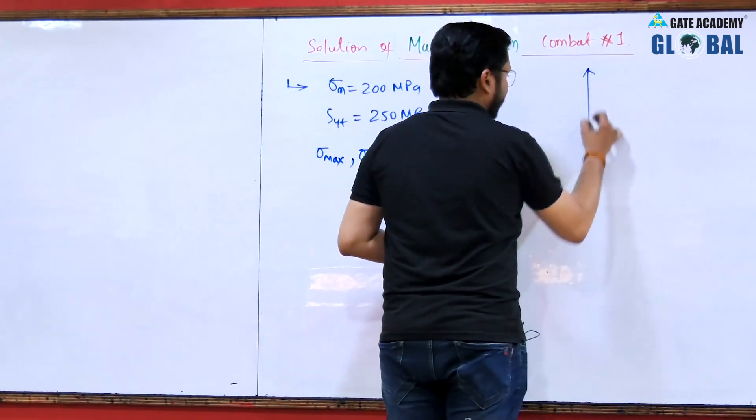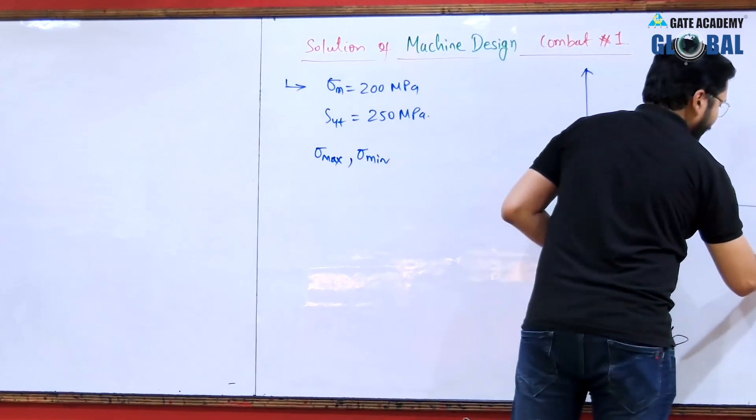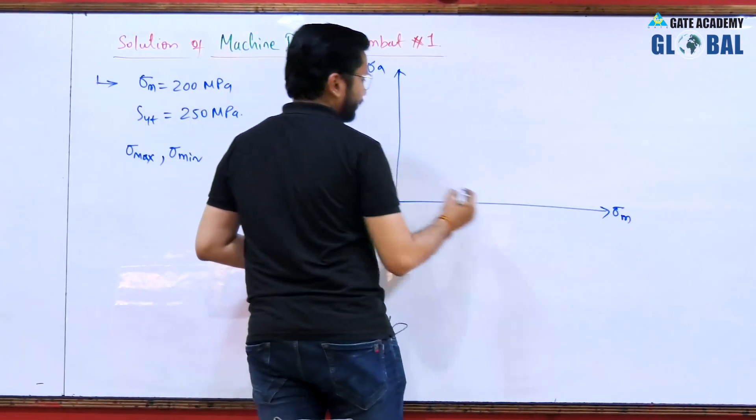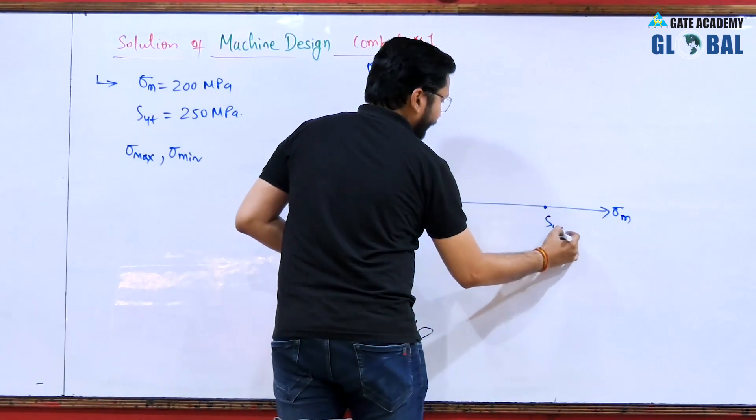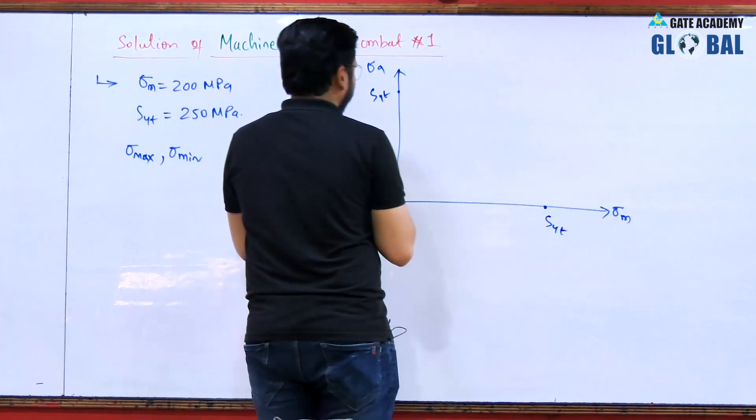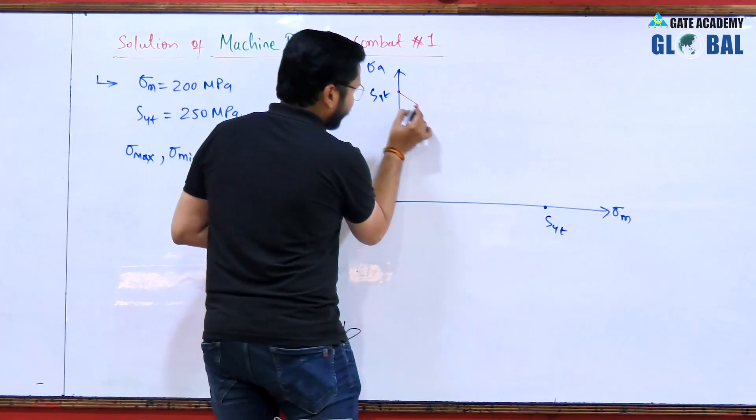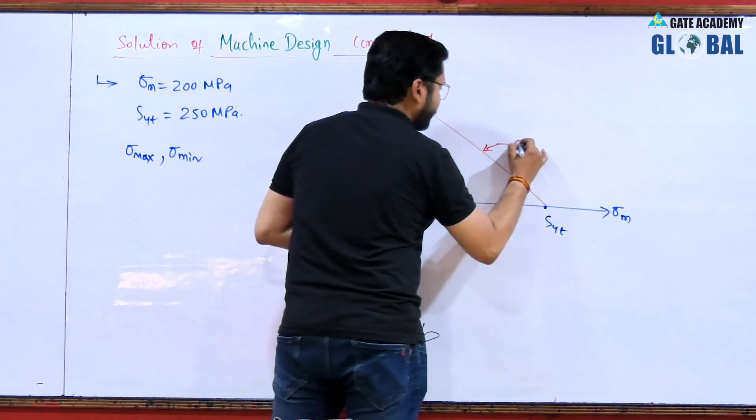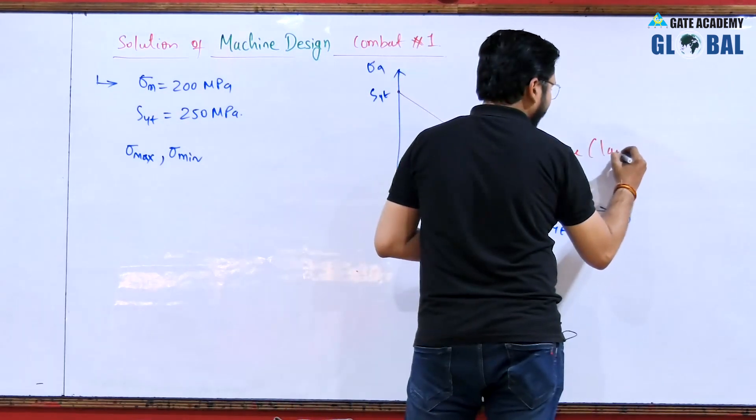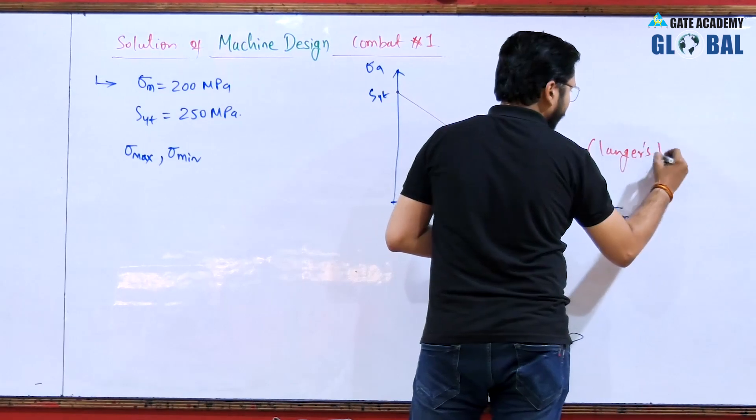For that particular case let us discuss some important concepts. If you draw a diagram between mean stress and amplitude of stress such that it will be joining the yield strength of the material located on both the axes, then you will be getting a line like this and this is known as yield line, also known as Langer's line.